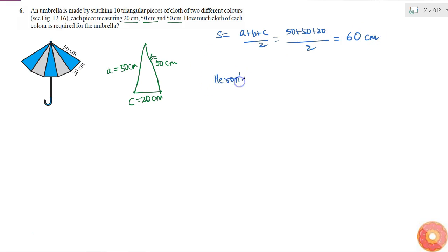then by Heron's formula, area of one piece of cloth is equal to square root over S into S-A into S-B into S-C.